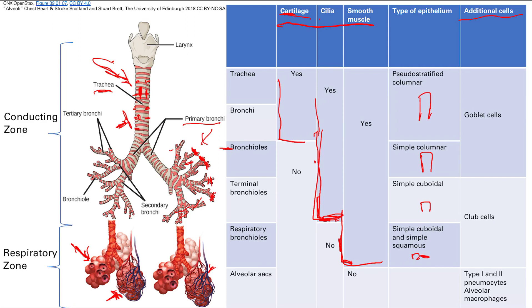Finally, note the conducting zone versus the respiratory zone. From the trachea down to the bronchioles is the conducting zone — its only function is to conduct air, not participate in gas exchange. The respiratory zone, where gas exchange actually occurs, is the respiratory bronchioles and the alveolar sacs.